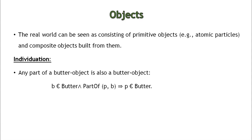Individuation indicates that, for example, a part of butter will also be butter. This is what we call individuation.